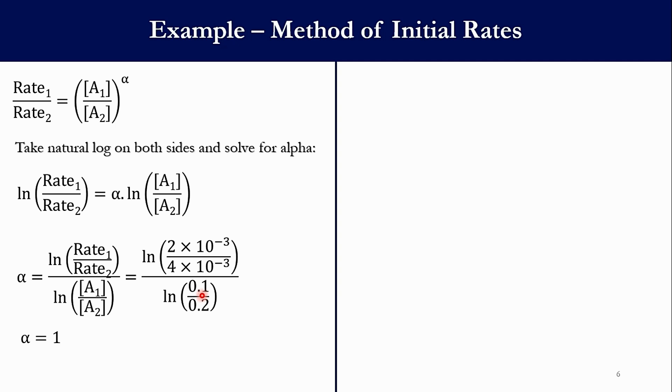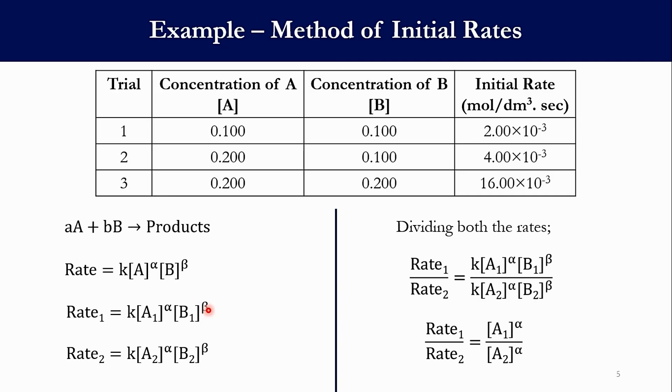Now in the same way we have to calculate for species B, for which we have to go back to the data again. And now you can see if we take 1 and 3, both of these are different. But if you see 2 and 3, then A will be cancelled out because of same concentration, while we can solve it for B. So we will be taking Rate₂ and Rate₃, we will be dividing it. K will be cancelled out and the concentration of A will be cancelled out in the same way where Rate₁ and Rate₂ were taken.